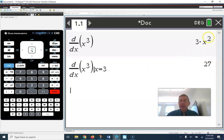And the function is 3x squared. The derivative is 3x squared, as you know, and when x is 3, that's 3 times 9, is 27. So there's the derivative using your nspire calculator.